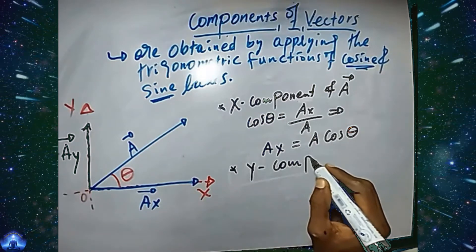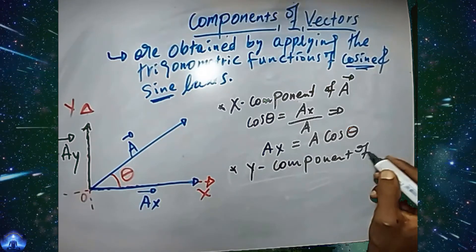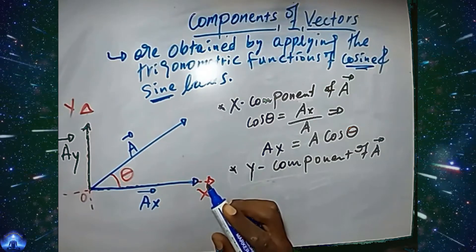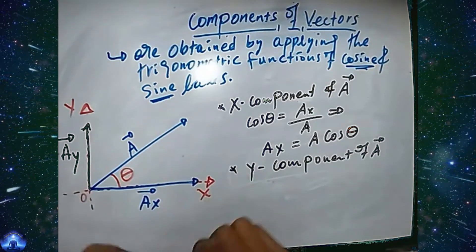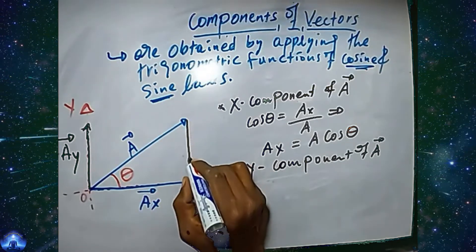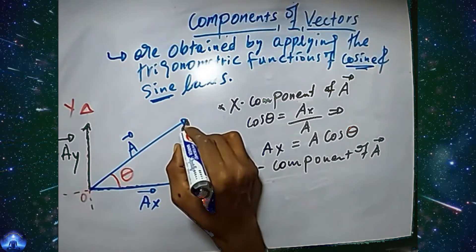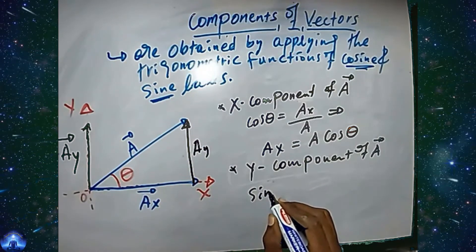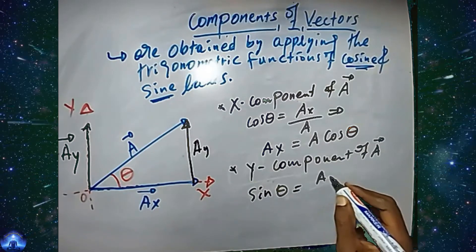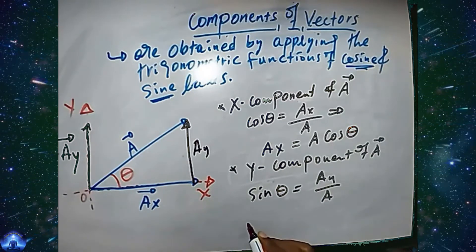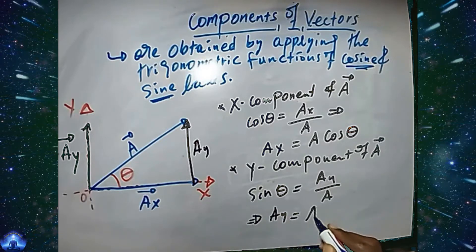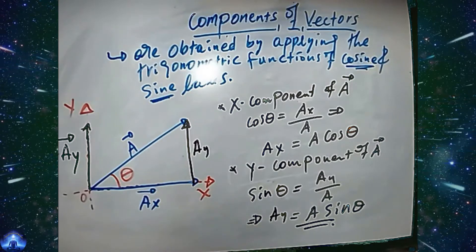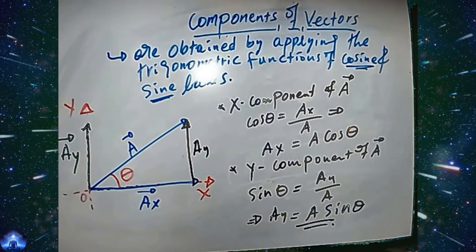For the y-component of vector A, let's draw an equal magnitude and parallel vector Ay. We can say that sine of theta equals Ay over A, therefore Ay equals A times sine of theta. These are the components of vector A on the x-axis and the y-axis in a two-dimensional coordinate system.